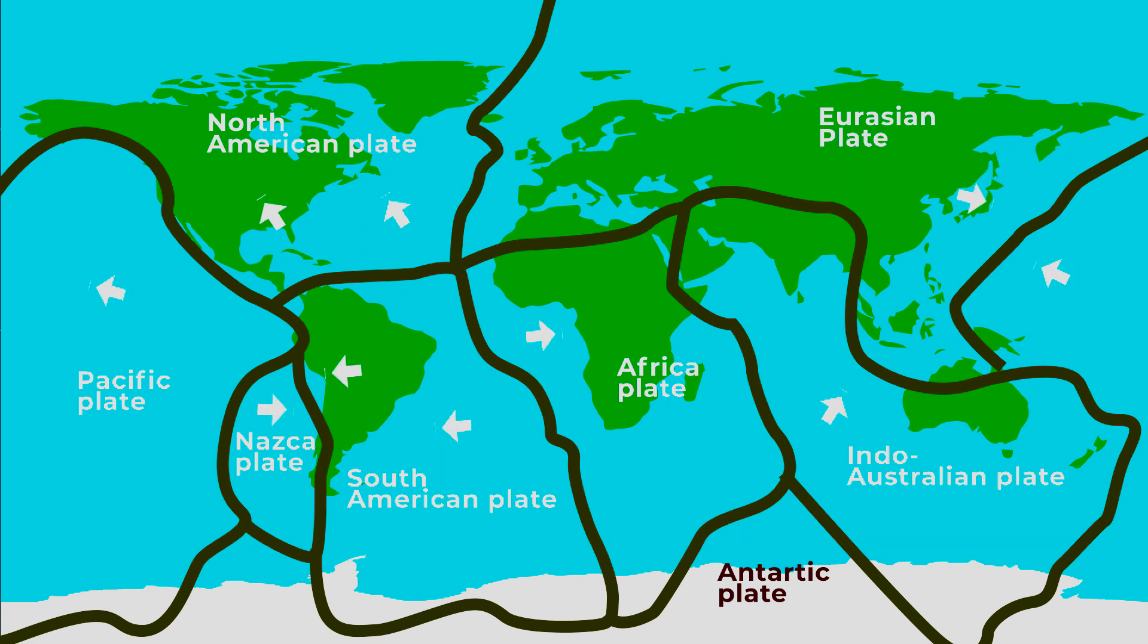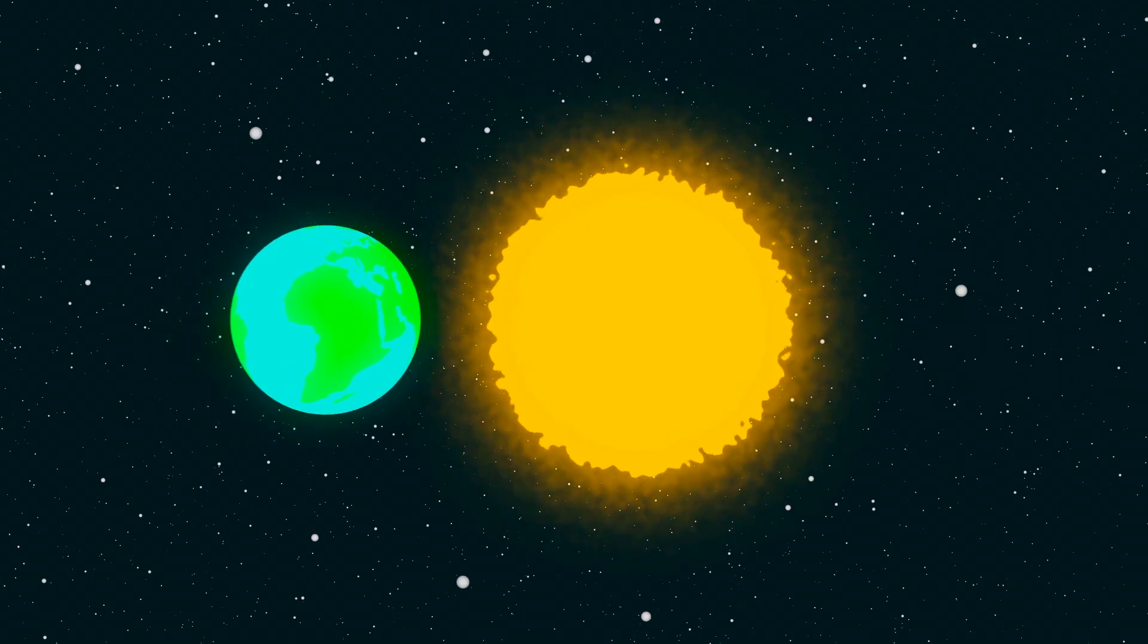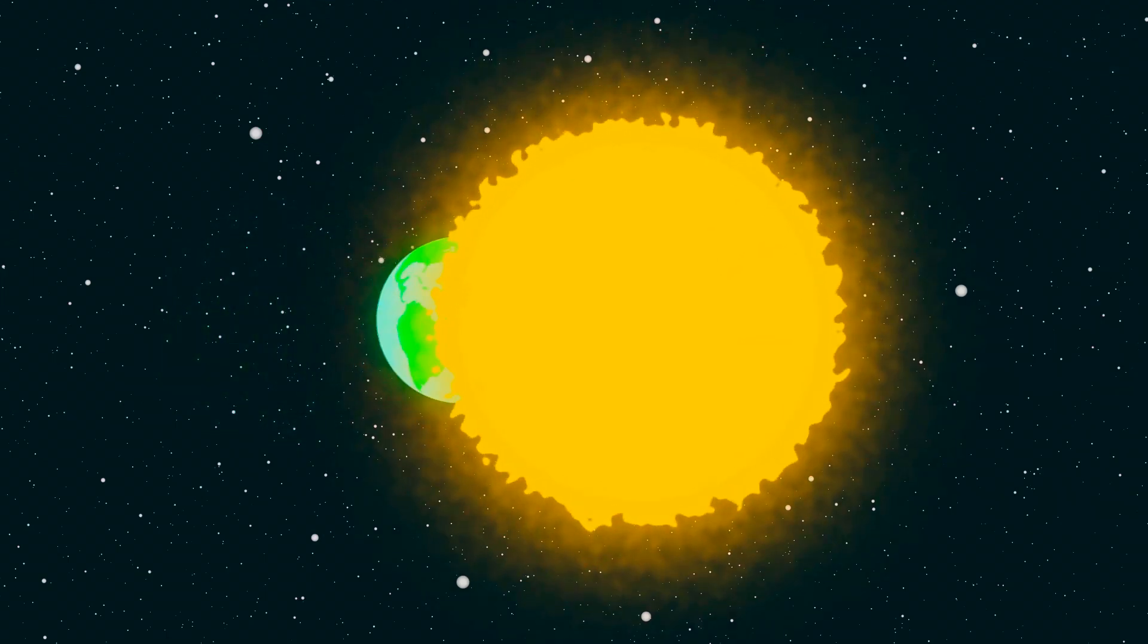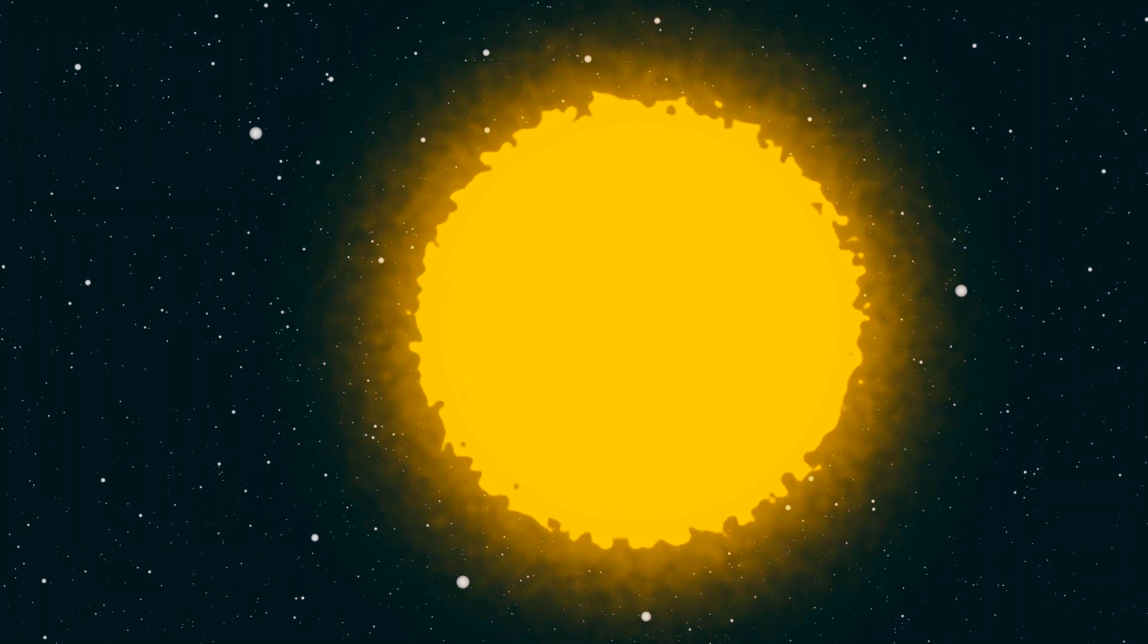It will take more than 90 billion years. But before it happens, Sun will reach Earth's orbit to melt the Earth in another 5 to 7 billion years into sea of magma.